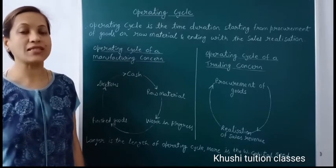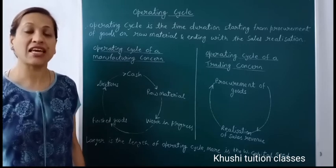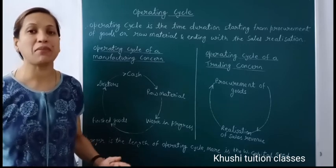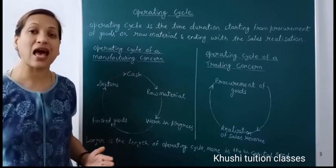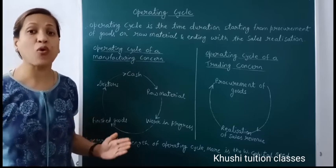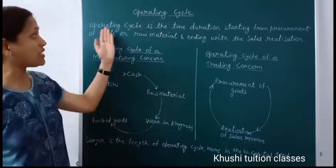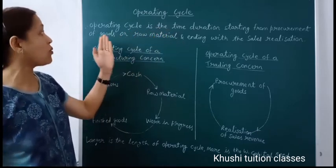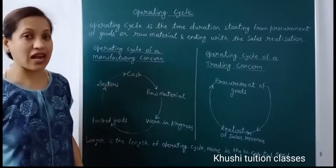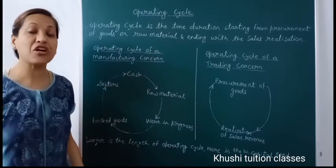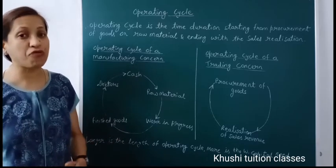Now we see the concept of operating cycle. Whenever we sell goods, it takes some time for cash to be generated. Therefore we need to arrange working capital so that business activity continues. This time gap is technically called the operating cycle. The operating cycle is the time duration starting from procurement of goods or raw material and ending with sales realization. The nature and length of operating cycle differs from firm to firm.